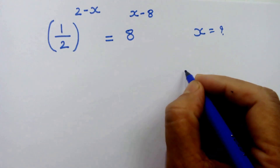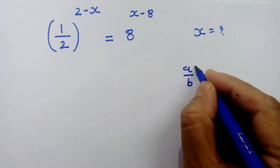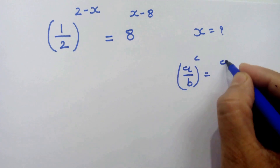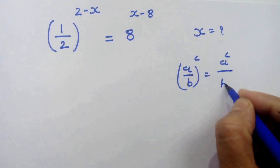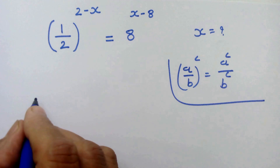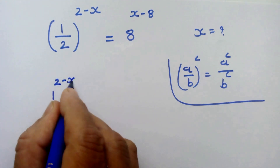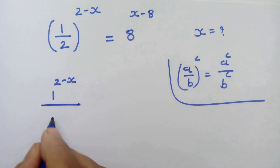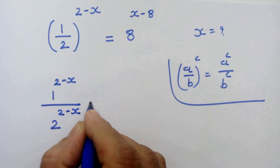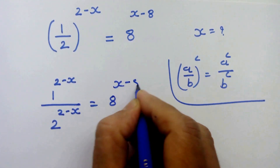First, we all know that a upon b whole raised to c can be written as a raised to c upon b raised to c. By using this rule on this side, we can write 1 raised to 2 minus x upon 2 raised to 2 minus x is equal to 8 raised to x minus 8.